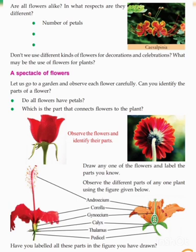Thalamus is a part of the flower. Pedicet connects the flower to the plant.